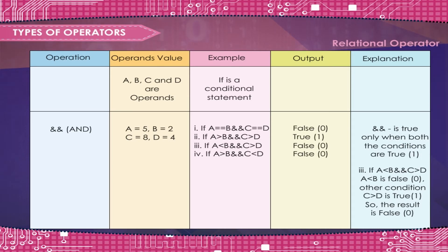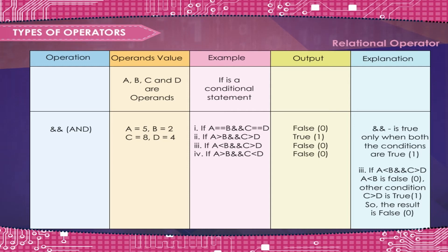Example 2: If A is greater than B and C is greater than D — True, 1. Example 3: If A is less than B and C is greater than D — False, 0. If A is greater than B and C is less than D — False, 0.